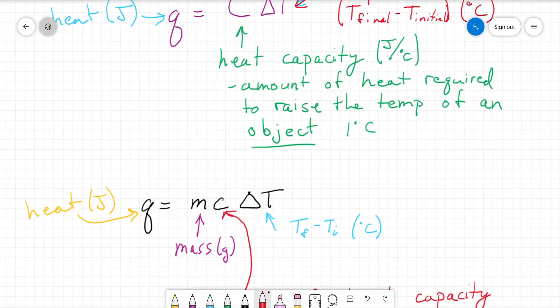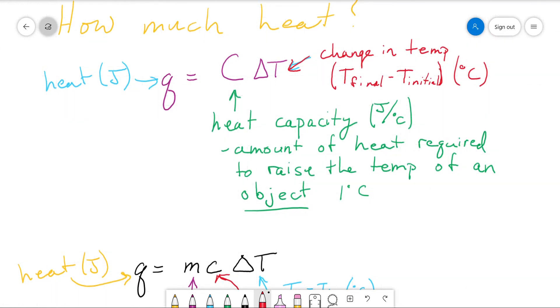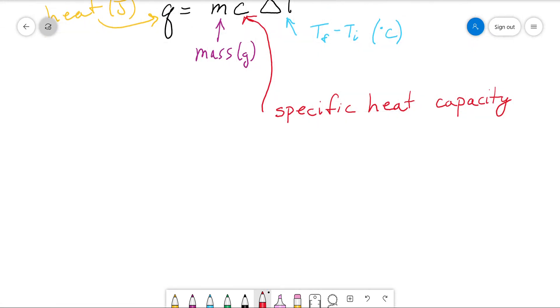And usually when people talk about heat capacity, this is what they're talking about also, but it is a little vague because the capital C is also heat capacity and it's a different quantity. This is the heat required to raise one gram of a substance one degree Celsius. And if you think back to the definition about calories - heat required to raise one gram of water one degree Celsius - this is where the term calorie comes from, or why we have that definition. It's from heat capacity.